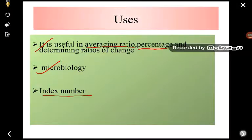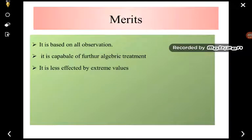Next coming up to the merits. What are the advantages when we use this type of formula? Merits are: it is based on all observations, all observations are considered. It is rigidly defined because all variables are considered. It is capable of further algebraic treatment. It is less affected by the extreme values.